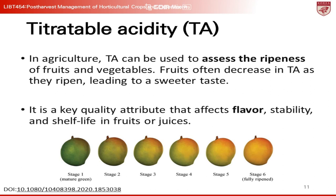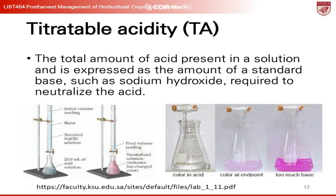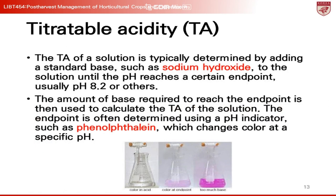In agriculture, TA is used to assess the ripeness of fruits and vegetables, as fruits often decrease in TA as they ripen, leading to a sweeter taste. TA is a key quality attribute that influences flavor, stability, and shelf life in fruits or juices. It represents the total amount of acid present in a solution, expressed as the amount of a standard base — such as sodium hydroxide — required to neutralize the acid. The TA of a solution is typically determined by adding sodium hydroxide to the solution until the pH reaches a certain endpoint, usually pH 8.2. The endpoint is often determined using a pH indicator such as phenolphthalein, which changes color at a specific pH.